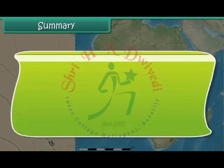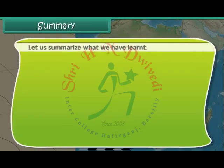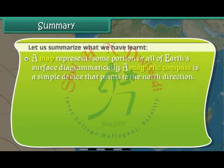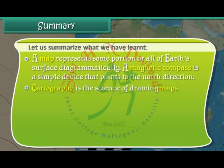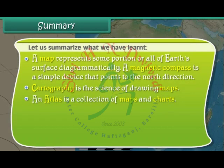Let us summarize what we have learned. A map represents some portion or all of Earth's surface diagrammatically. A magnetic compass is a simple device that points to the north direction. Cartography is the science of drawing maps. An atlas is a collection of maps and charts.